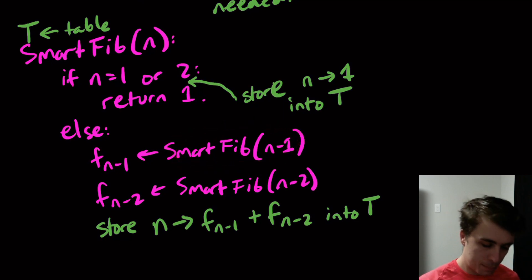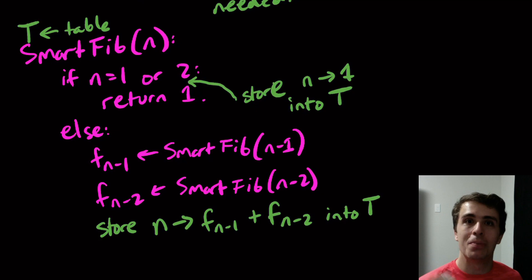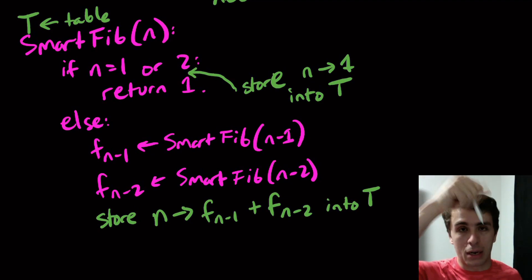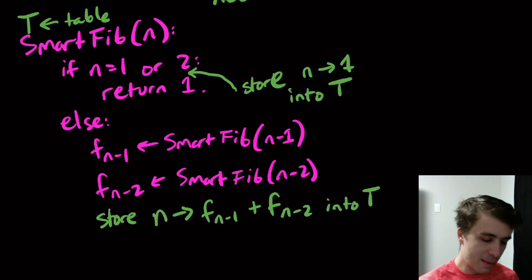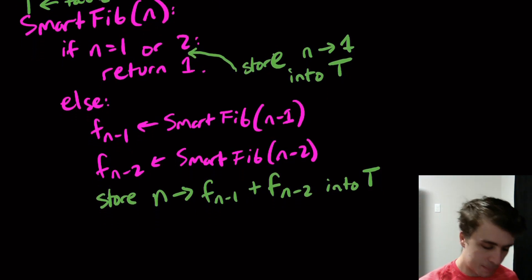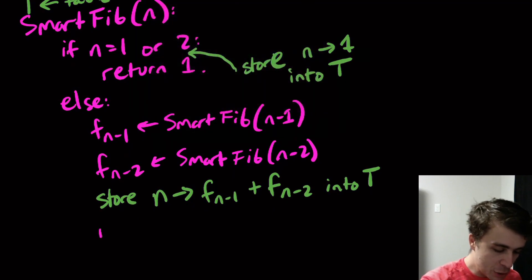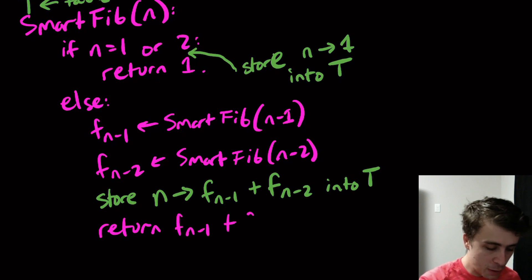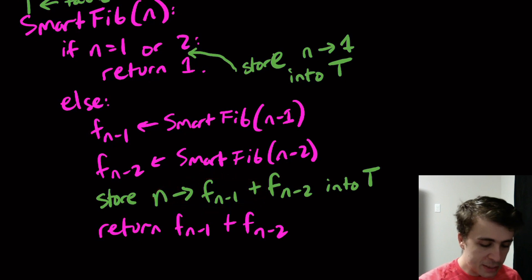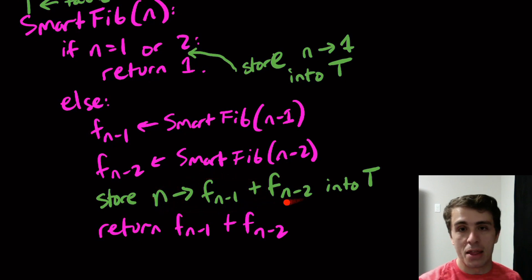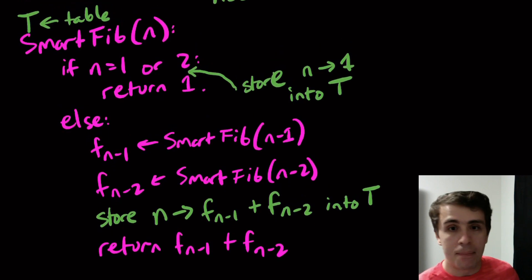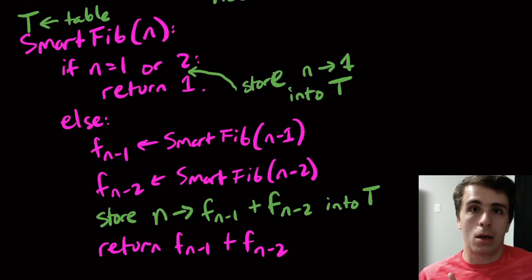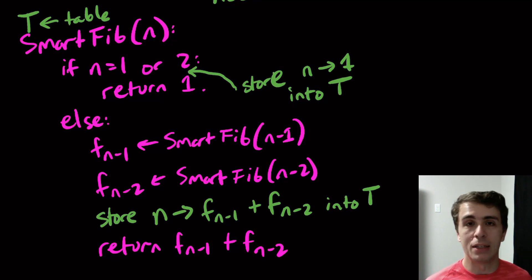Why is this better? When we make a recursive call, we're assuming all the previous calculations are already stored in the table — the same way we assume recursion produces the correct value. I invite you to work through a specific value of n in the comments to see that this actually works. At the very end, we return f(n−1) + f(n−2). Looking up n in the table gives us the value we want. This is much better because we're not repeating all the redundant recursive calls.